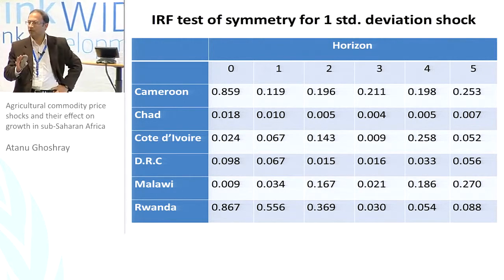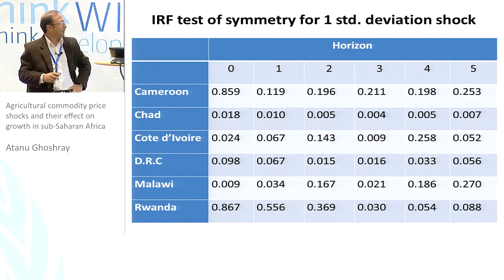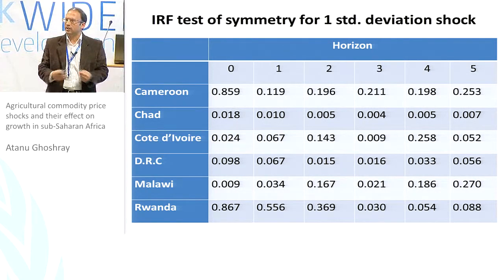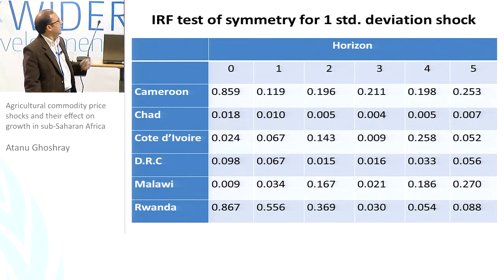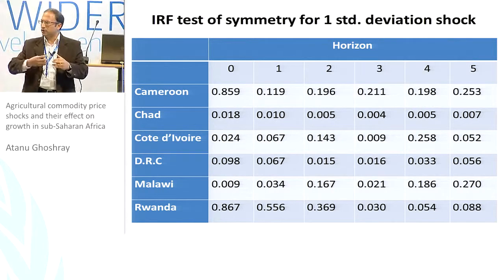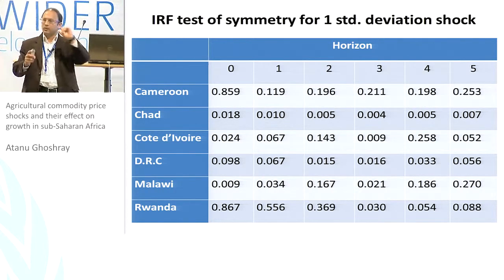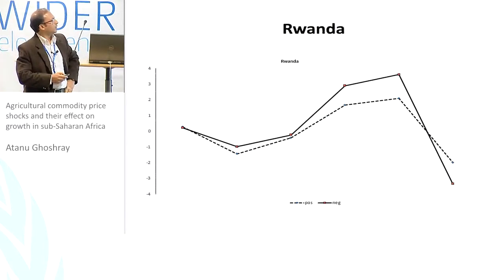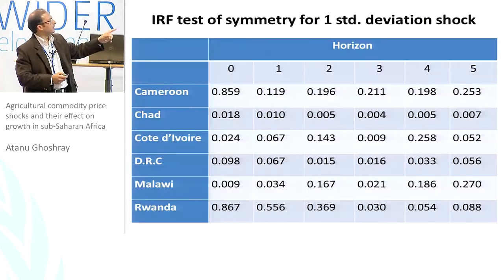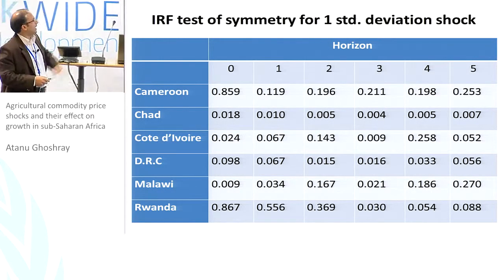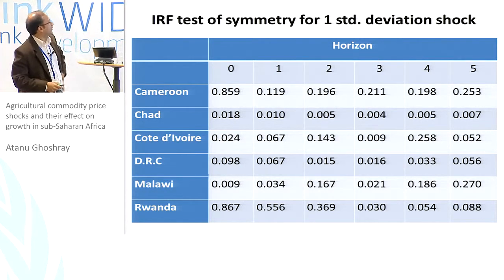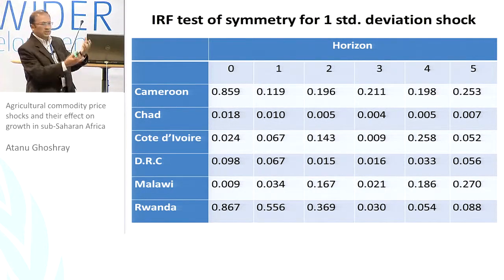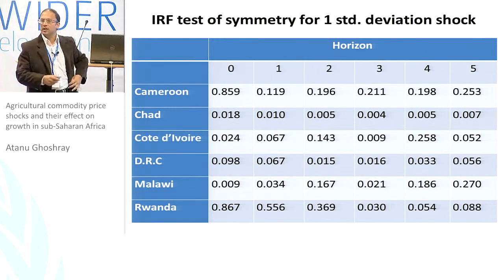Given that five countries are found to have asymmetric responses — with Cameroon included as a comparison — we compute impulse response functions as an innovation accounting exercise, calculating responses due to positive and negative shocks to determine whether their differences are statistically significant. The results show that Chad, Cote d'Ivoire, the Democratic Republic of Congo, and Malawi have quite significantly different responses. Over time, some of these differences tend to diminish, but sometimes the difference persists.